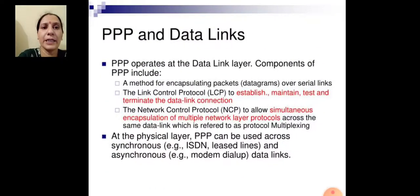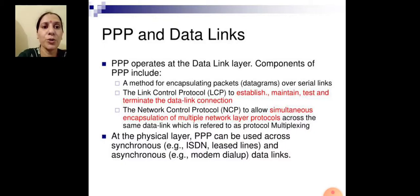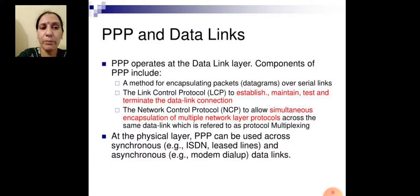PPP operates at the data link layer. The components of the PPP model are: first, a method for encapsulating packets over serial links; second, the link control protocol to establish, maintain, test, and terminate the data link connection; third, the network protocol to allow simultaneous encapsulation of multiple network layer protocols across the same data link, which is referred to as protocol multiplexing.